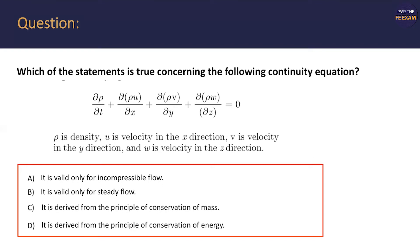If we want to make an educated guess on this, how would we do that? What do we know? We know that we have ρ equaling density, U is velocity in the X direction, V is velocity in the Y direction, and W is the velocity in the Z direction. So we pretty much have density and velocity here. If we're looking at the four answers and we need to make an educated guess, is it valid for only incompressible flow or only steady flow?